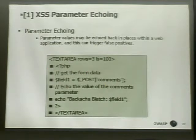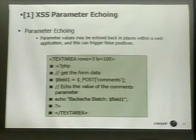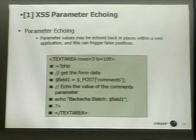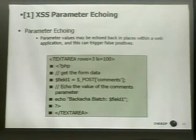Now I'm getting into the different types of false positives we've detected. This one we call cross-site scripting parameter echoing. The sample app takes the parameters that are sent in the request and echoes them back. That causes false positives because the scanner doesn't detect the execution of the string — just its presence. For cross-site scripting, if it's in a text field or text area, it's just text and it's not going to be executed by the browser, so it's not a vulnerability.